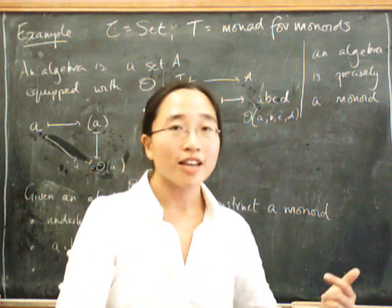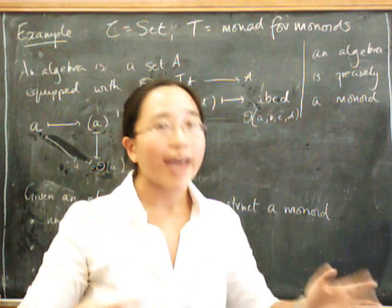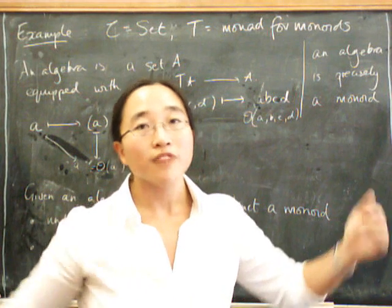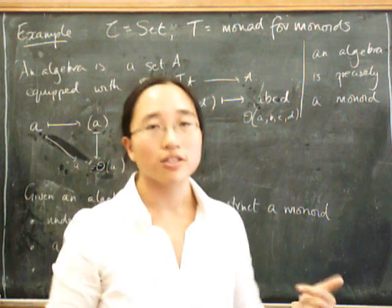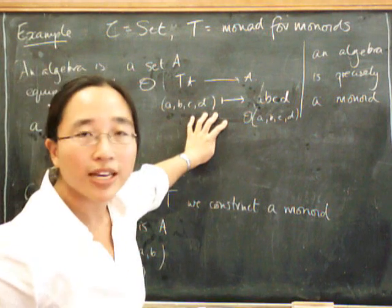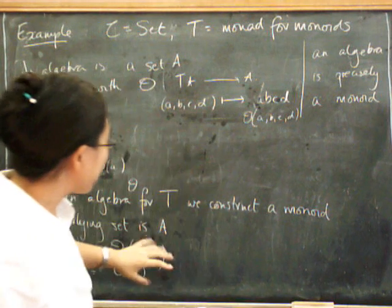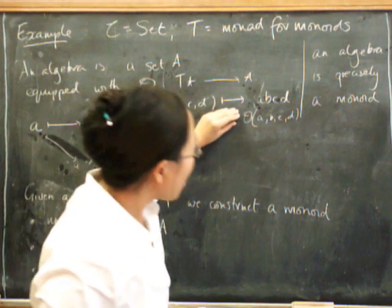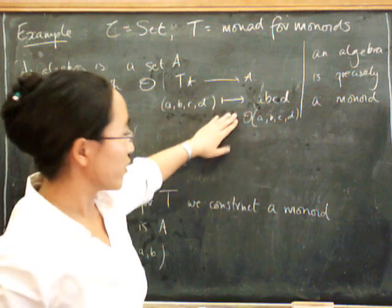You can also do it the other way and say, we're going to start with a way of multiplying n things in a row for every n, and then after the event, make sure that they all interacted with each other properly. And that's what this monad way of looking at things is. This is how we translate between the binary way of doing things and the unbiased way of doing things.